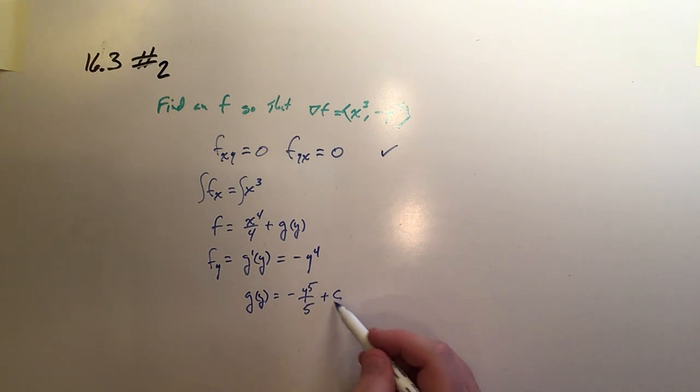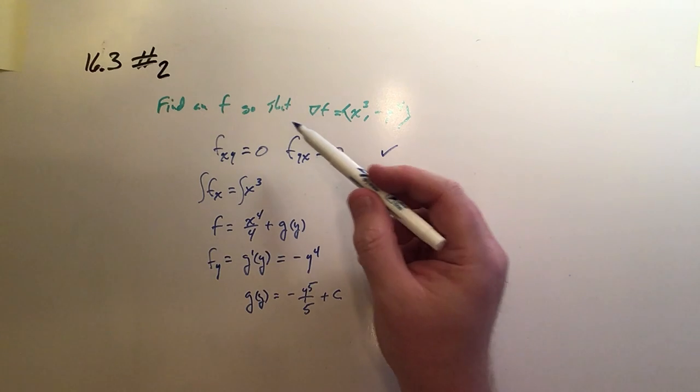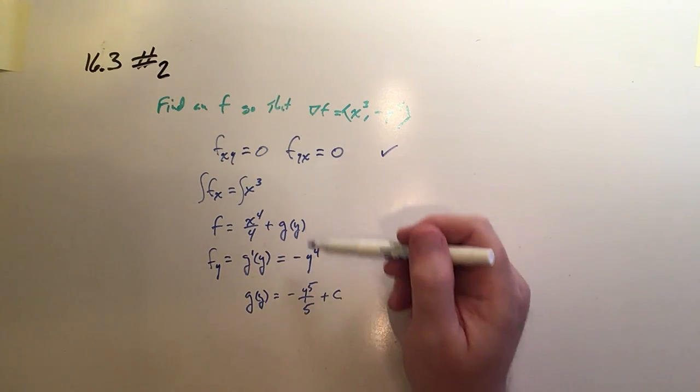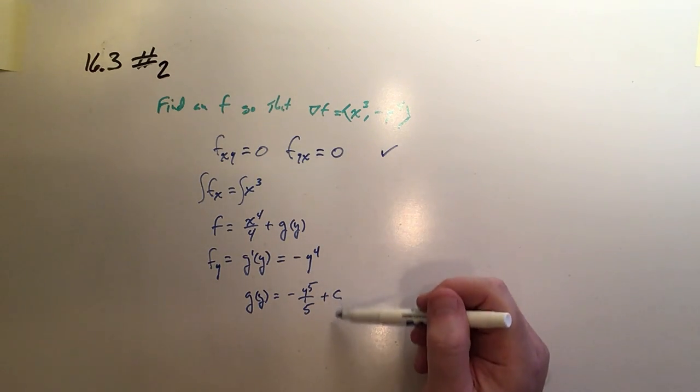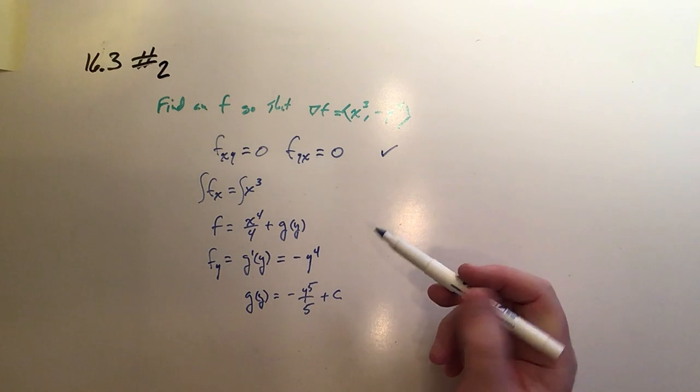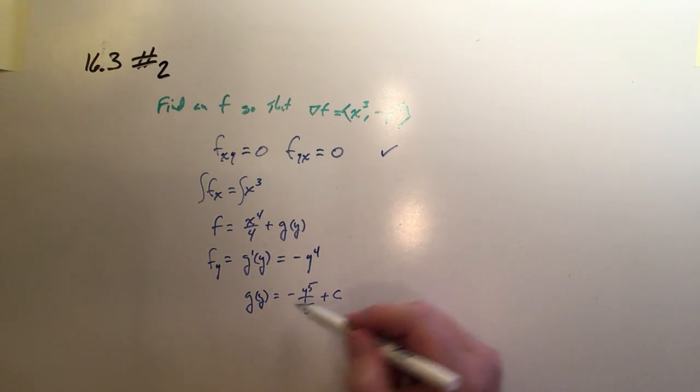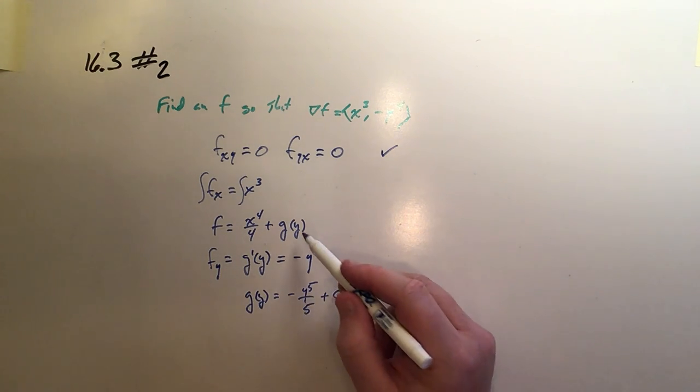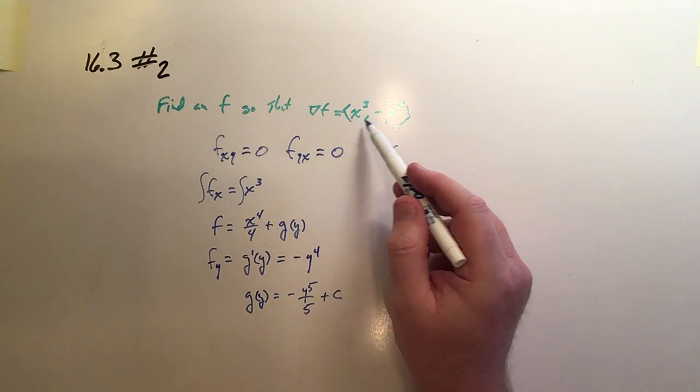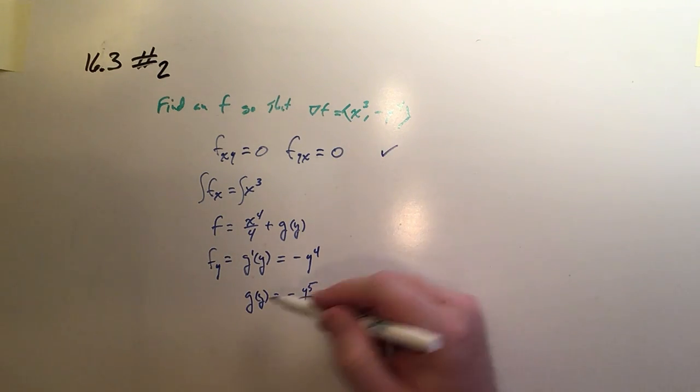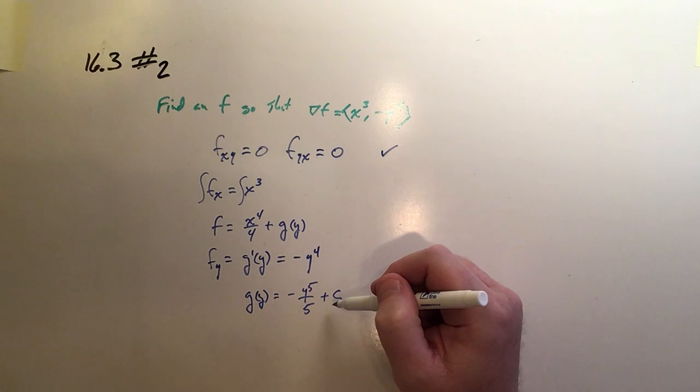It would not be incorrect to add this on. But if we're going to then do a definite integral of this, this will just cancel out anyway as a definite integral. So there's no reason to add on that constant. This will adequately produce that. And so we don't need the constant in order to complete our g(y).